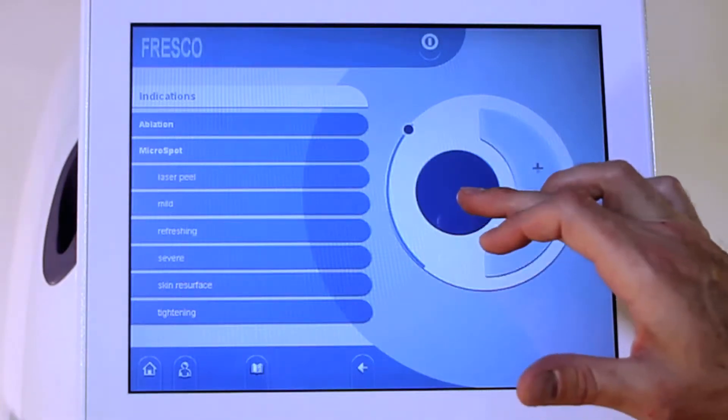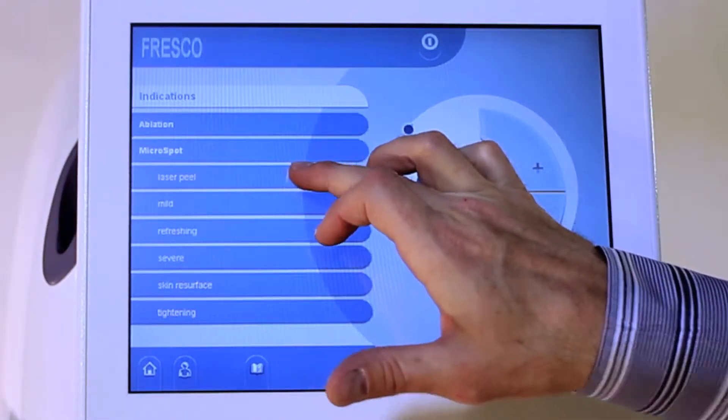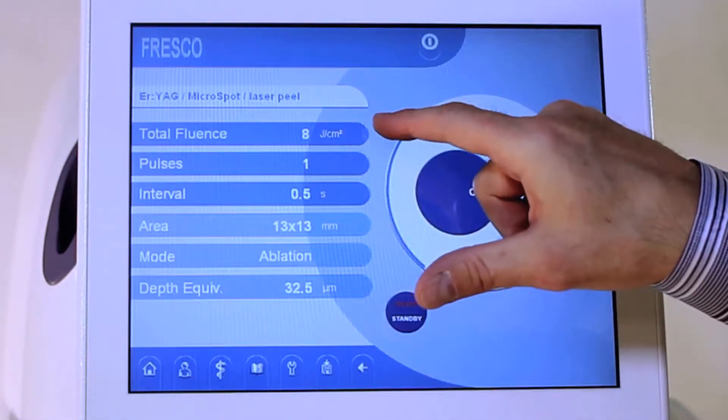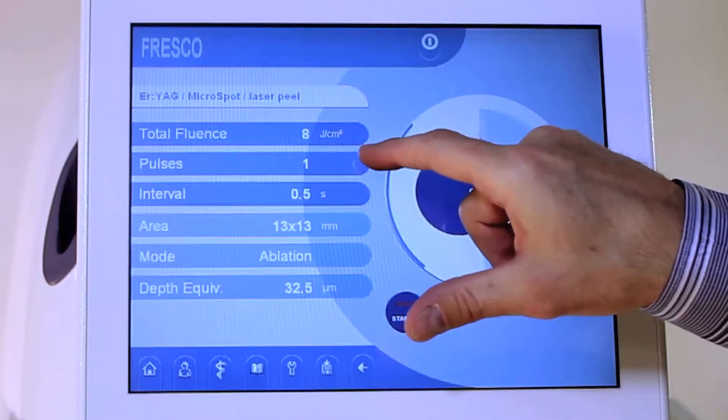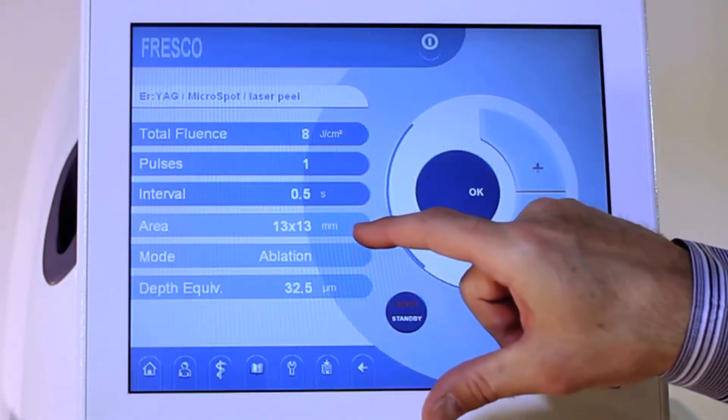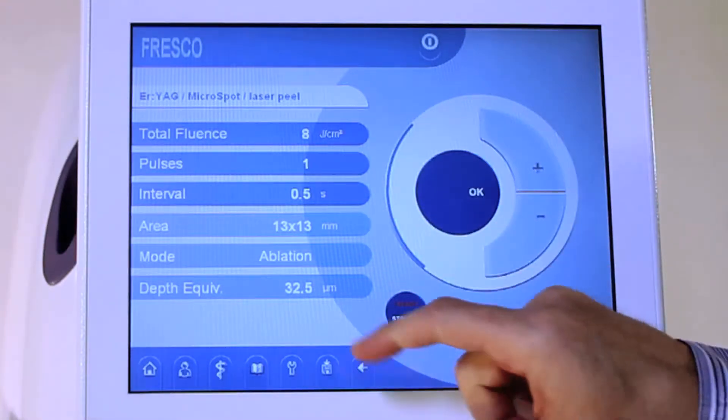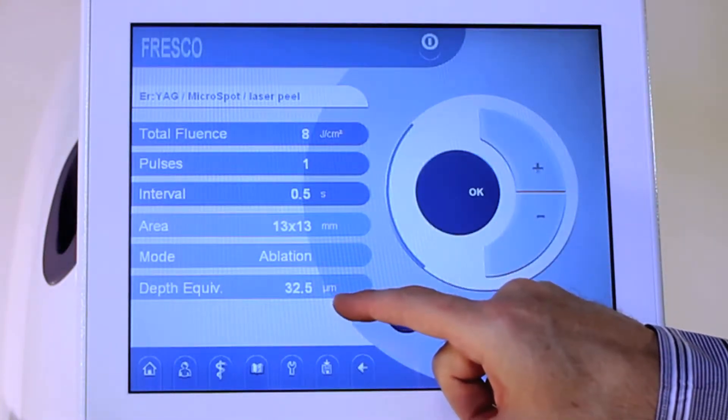When you want to adjust any one of these settings, you simply choose. It's going to give you your presets, and it will tell you your total fluence, the number of pulses, the interval between each pulse, your spot size at your treatment, which is a 13 by 13 fractional, and your depth equivalent.